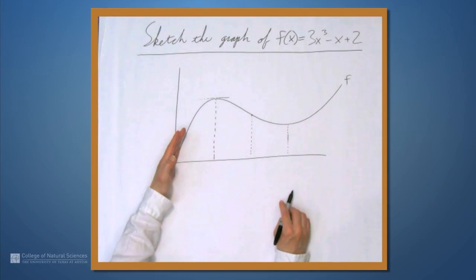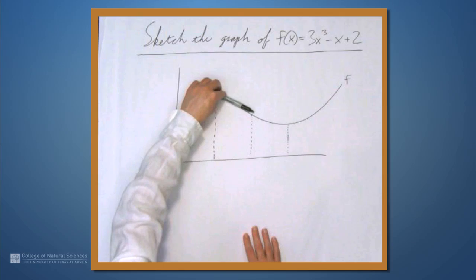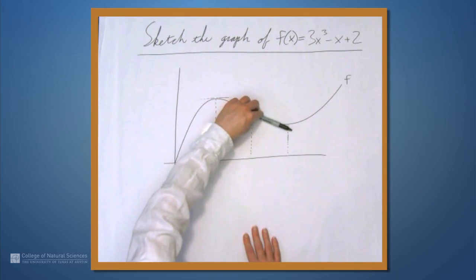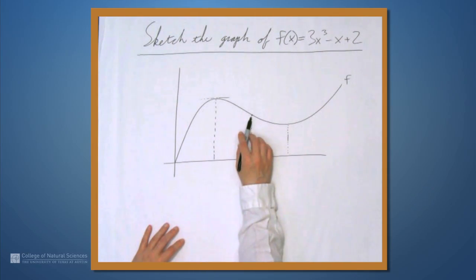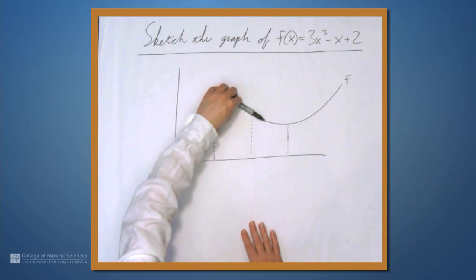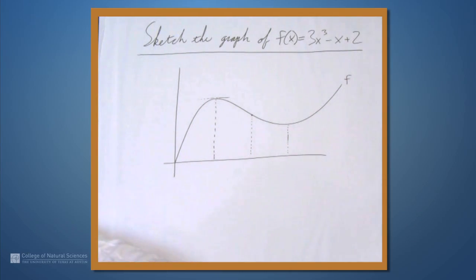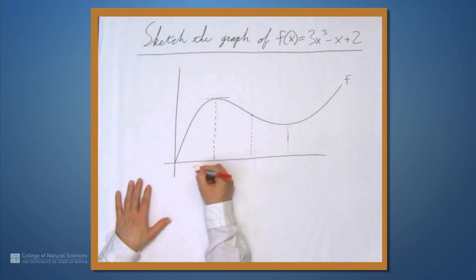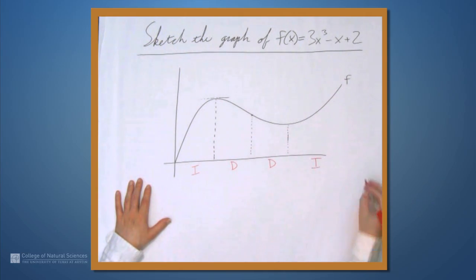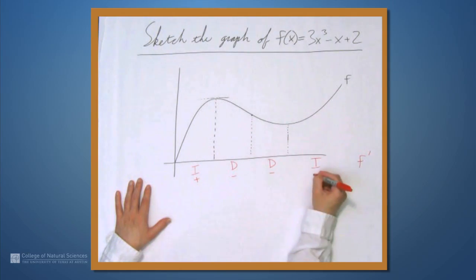Think about what happens to the slope of the tangent line. Starting here and moving along, the slope is decreasing, decreasing, decreasing, until it hits this point — it never gets smaller than this. Then keep moving to the right and it starts to increase again. So this is determined by f''. It's where the second derivative is 0, because it's where f' reaches a minimum. So f is increasing, then decreasing, then increasing. Increasing means f' is positive, decreasing means f' is negative.